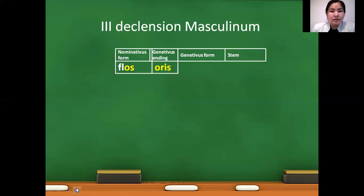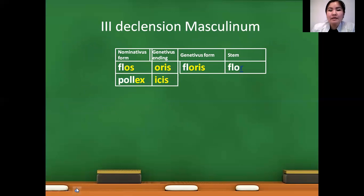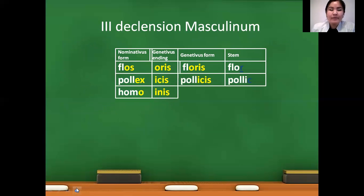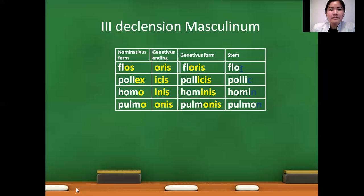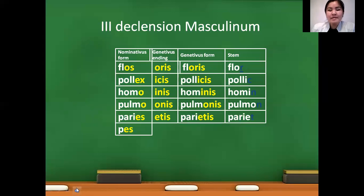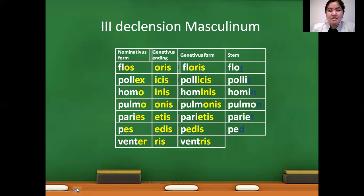In third declension masculinum: flos — genitive floris — stem: flor. Pollex — pollicis — stem: pollic. Homo — hominis — stem: homin. Pulmo — pulmonis — stem: pulmon. Paries — parietis — stem: pariet. Pes — pedis — stem: ped. Venter — ventris — stem: ventr. Vomer — vomeris — stem: vomer.